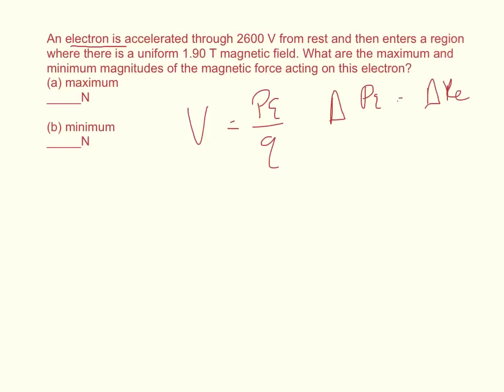Anytime there's a potential energy we can define this change as the kinetic energy divided by the charge. So the voltage is going to equal one half of the mass times the velocity squared divided by the charge.